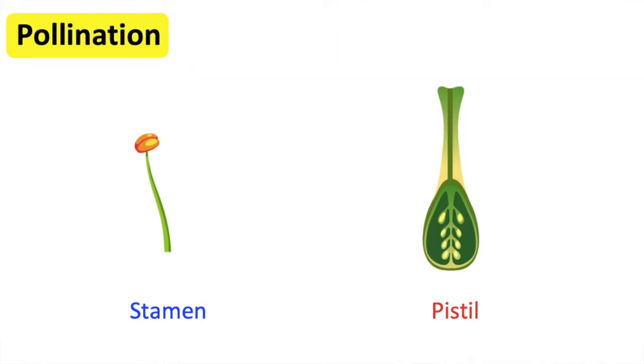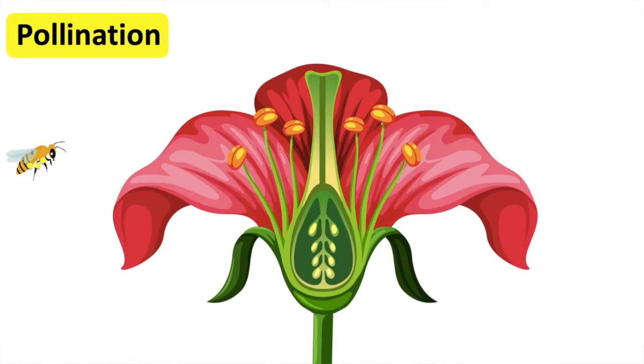Pollination can occur in a few different ways. Insect pollination is where an insect carries the pollen from one flower to another flower. These insects are attracted to the bright coloured petals and the nice smell. The pollen sticks to the insect and it's carried all the way to another flower where the pollen sticks to the stigma.